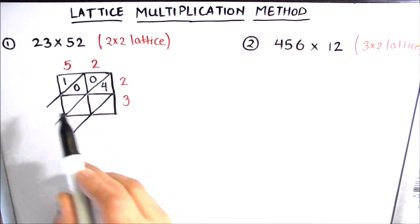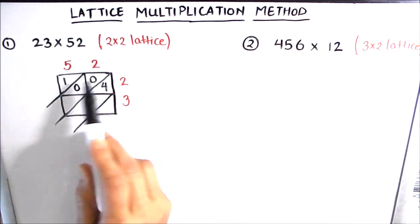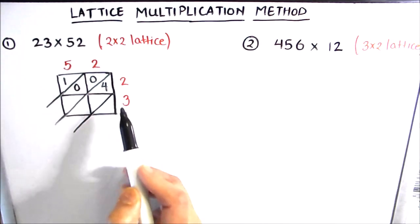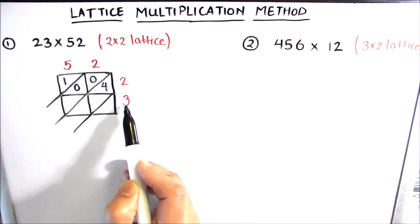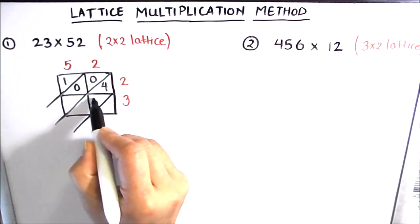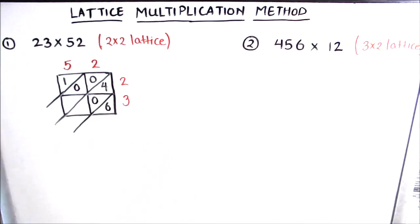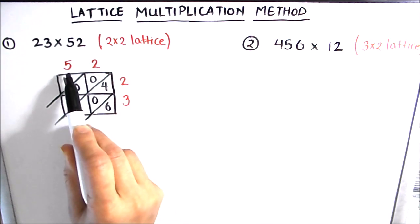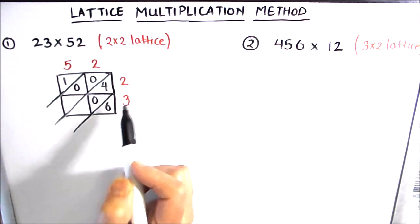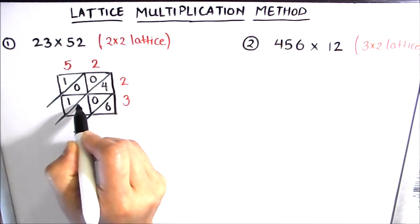Next we multiply the number in the second row by the numbers in both columns. In the first column we have 2 and in the second row we have 3, so 3 times 2 is 6, written as 06. And in the second column we have 5 and in the second row we have 3, so 5 times 3 is 15, written as 1 and 5.